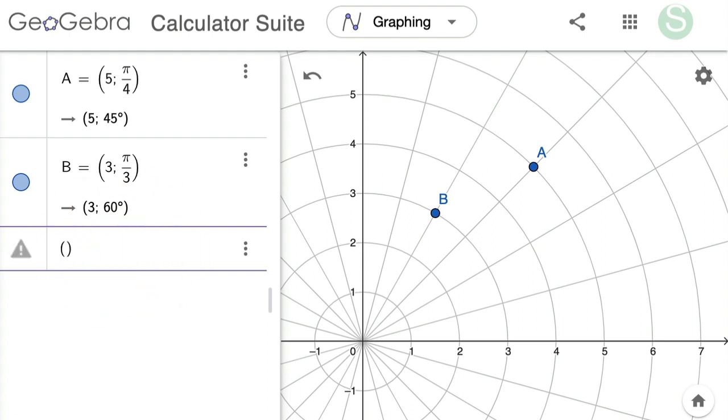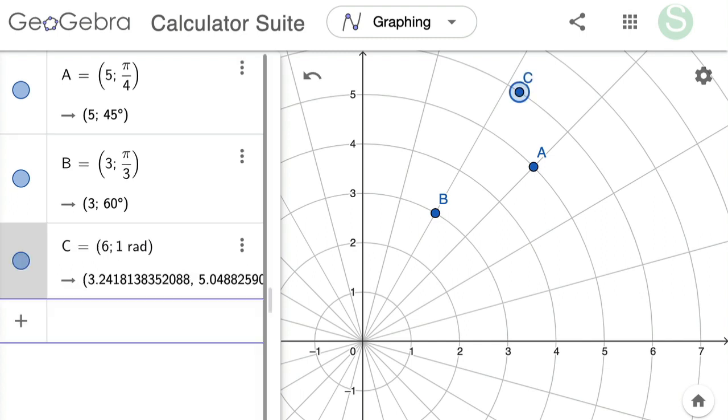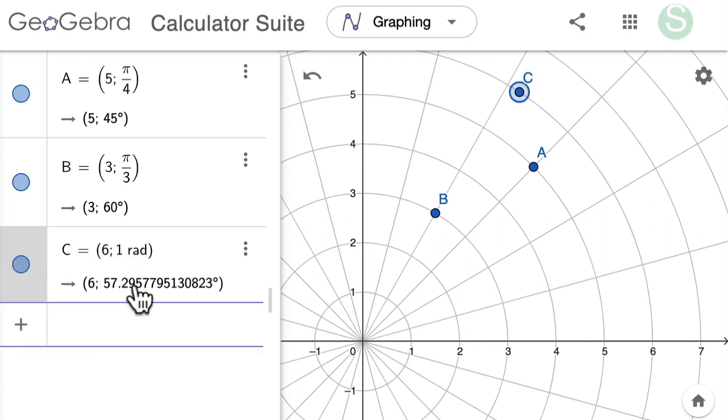And I could also even enter in points, say I want to go 6 and then 1 radian, let's type in 1 rad, and it does that automatically. 180 over pi, 180 over 3 is about 60.